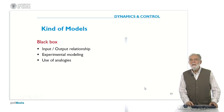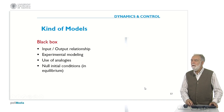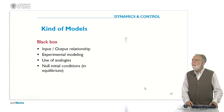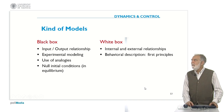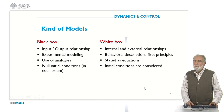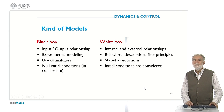We can also classify models by the way we obtain them. In the black box type of models, we only represent the input-output relationship. This model is obtained experimentally using analogies, without considering what is inside — we assume the system is in equilibrium with zero initial conditions. In the case of the white box, we know what is happening inside, we represent the internal and external variable relationships, and we derive equations based on first principles, with initial conditions considered.